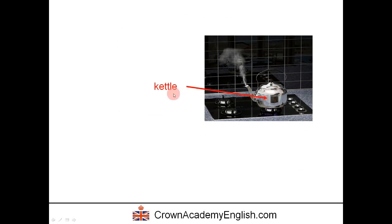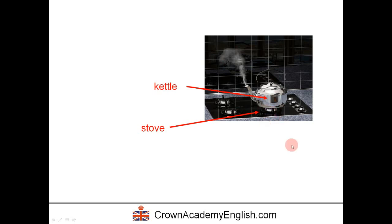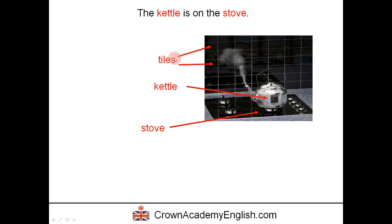This object is called a kettle. We use a kettle to boil water. You can see the water is boiling and steam — S-T-E-A-M — is coming out of the kettle. The kettle is on the stove, the hot surface. It looks like a gas stove. Can you remember the word for these little squares and rectangles? Yes, these are tiles — wall tiles, because they're on the wall.